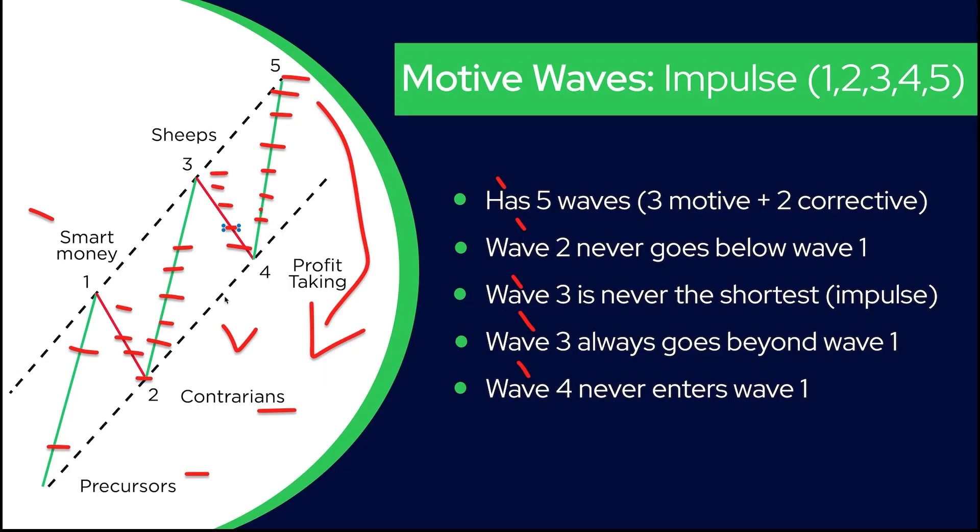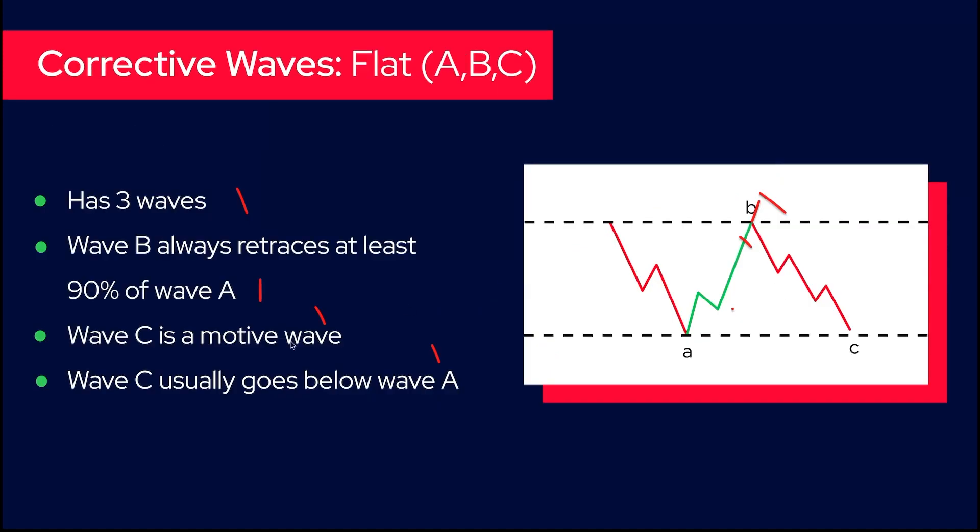Zigzag and flat - usually when you have a zigzag in the second wave, you're going to have a flat correction in the fourth wave. If the second wave is a flat, then usually the fourth wave is going to be a zigzag. Once you spot that the second wave is a zigzag, you are in an impulse, you have the third wave - you can recognize it because it's very impulsive. Then you have a very high probability that this correction pattern would be a flat. You can use the flat characteristics to predict that B and C are going to be here, so you can sell here and buy here.